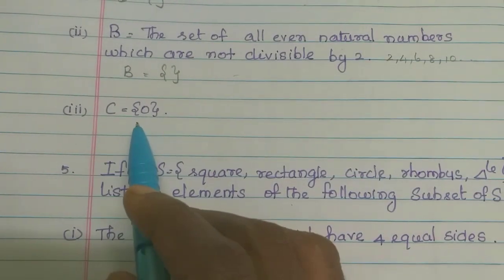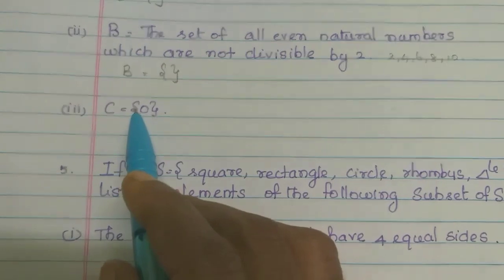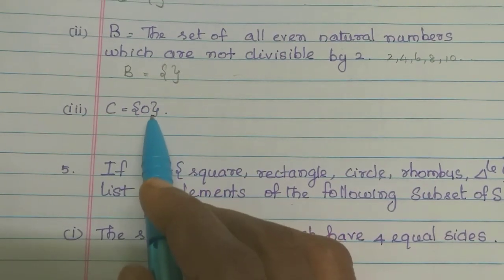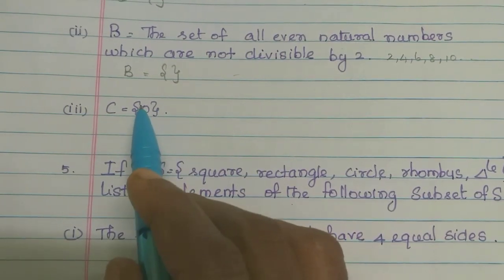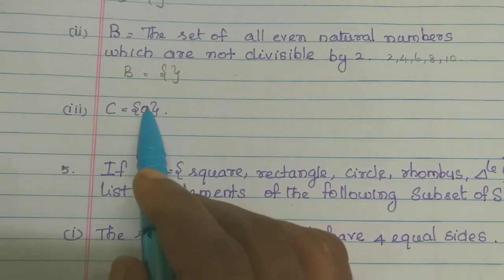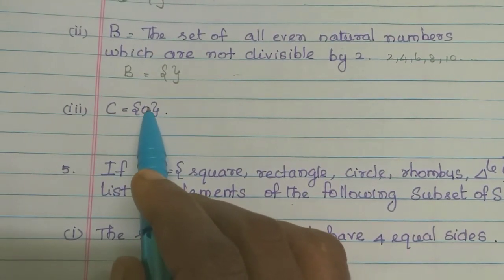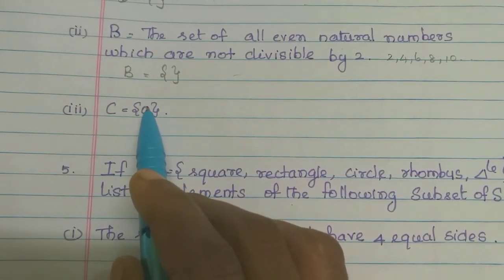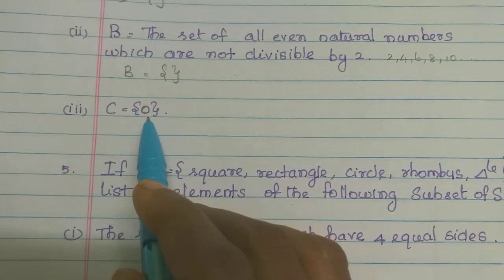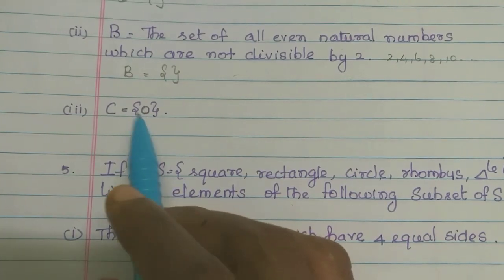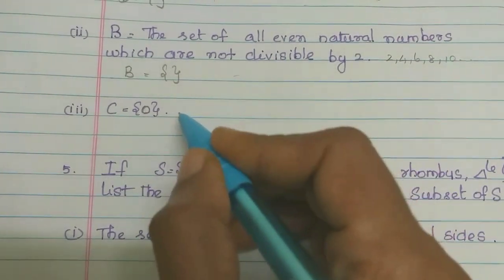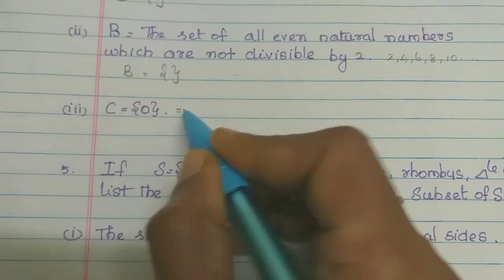Next, C is equal to a Singleton Set. There is only one element in the set, and that element is 0. So this is a Singleton Set.